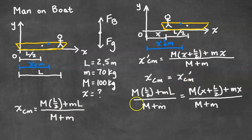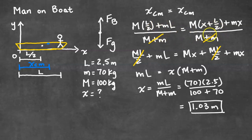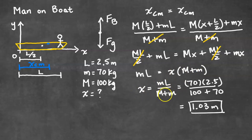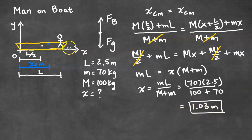Since there are no net external forces on the man-boat system, the center of mass before the man walked equals the center of mass after. Setting the two equations equal and canceling the total mass from the denominator, we get M·L/2 + M·L = M·X + M·L/2 + M·X. The L/2 terms cancel, leaving M·L = X times the total mass. Dividing both sides by the total mass gives X = M·L / (M_boat + M_man). With M = 70 kg, L = 2.5 m, M_boat = 100 kg, and M_man = 70 kg, we get X ≈ 1.03 meters.